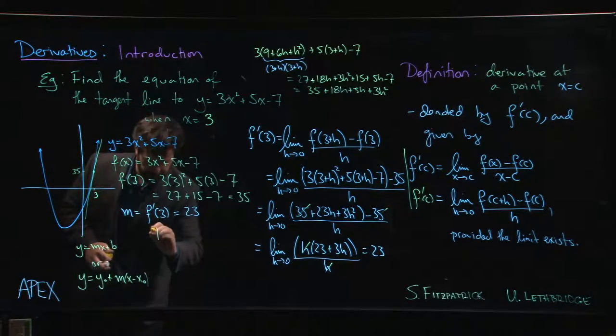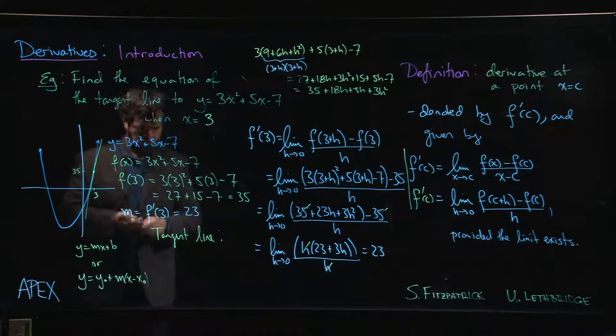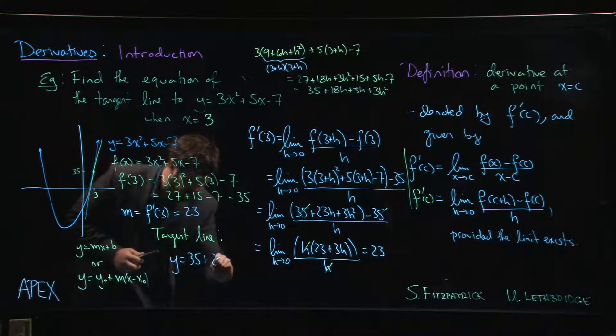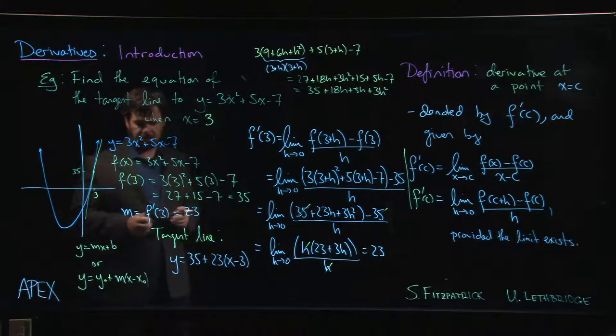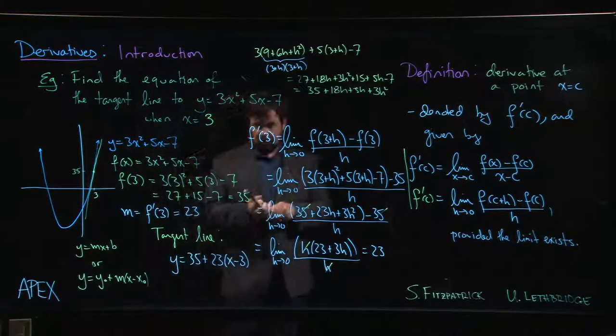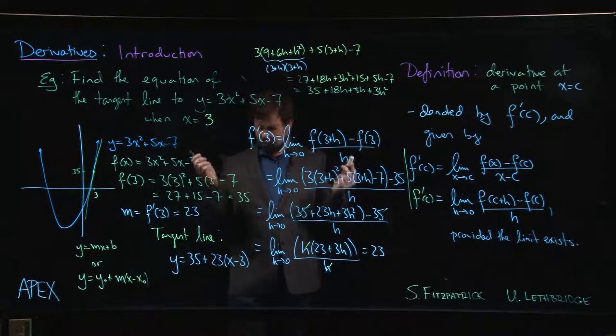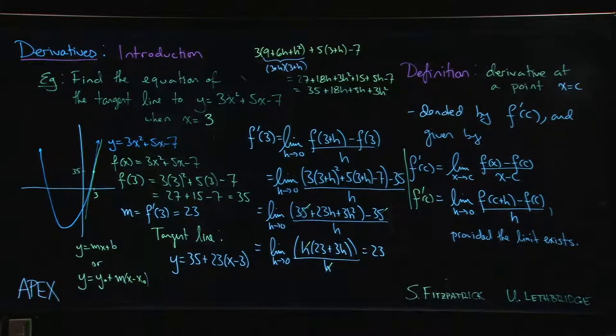And so the tangent line is going to be y equals 35 plus 23 times (x minus 3). And again, you can simplify that and put it into y equals mx plus b form if you feel that you have to, but you don't have to. You can leave it like that.